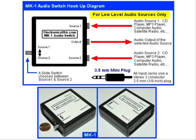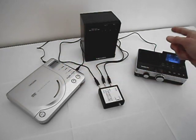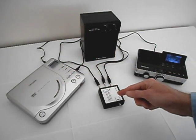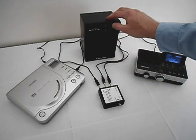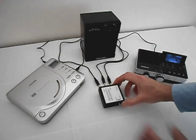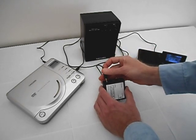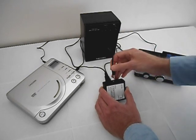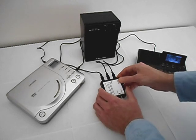So next, let's have a look at what this is all about. Here's the setup: we have a CD player on the left, an MP3 player on the right, and in the middle is the MK1 audio switch, all feeding into an amplified speaker. Let's take a moment to connect the cables up to the MK1 — it's very simple: the CD player, the amplifier, and the MP3 player.